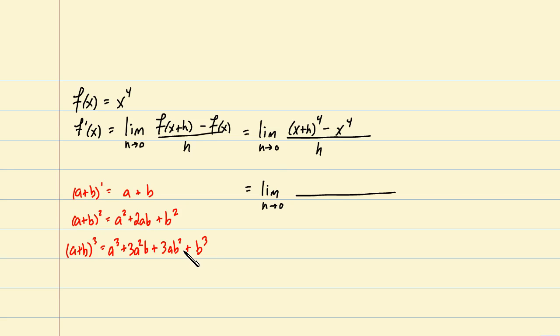And of course, all these could be justified by simply multiplying this out, foiling it all out. We could do the same thing for a binomial to the fourth power. And if we did, we would discover that this is a to the fourth plus 4a cubed b plus 6a squared b squared plus 4ab cubed, and finally plus b to the fourth.